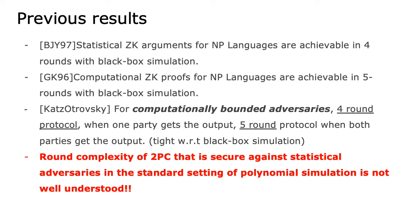Let's first look at some known results. For interactive proofs, Polaria et al. has shown that statistical zero-knowledge arguments for NP languages are achievable in four rounds with black box simulation. Similarly, Goldreich et al. has shown that computational zero-knowledge proofs for NP languages are achievable in five rounds with black box simulation. In the case of two-party computation against computationally bounded adversaries, Katz and Ostrovsky provided a four-round protocol when one party gets the output and a five-round protocol when both parties get the output. However, the round complexity of two-party computation that is secure against statistical adversaries is not well understood.